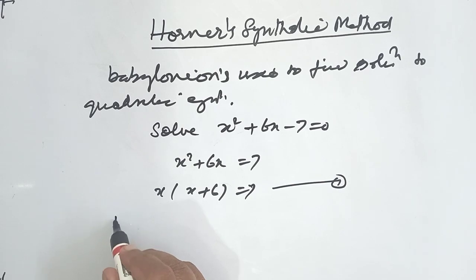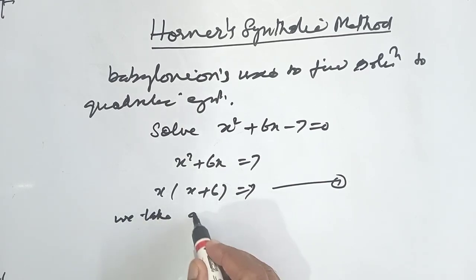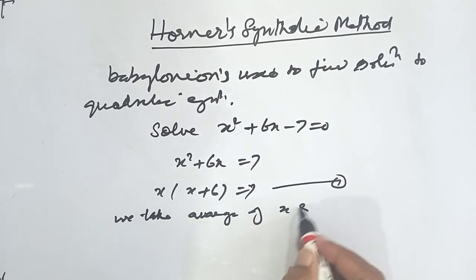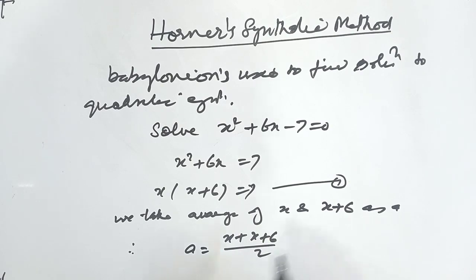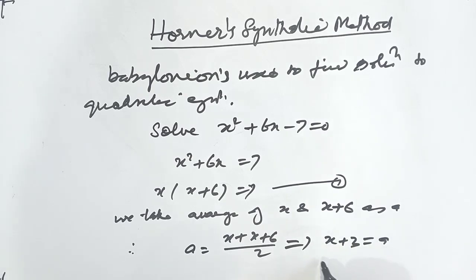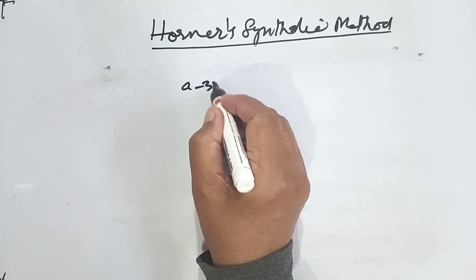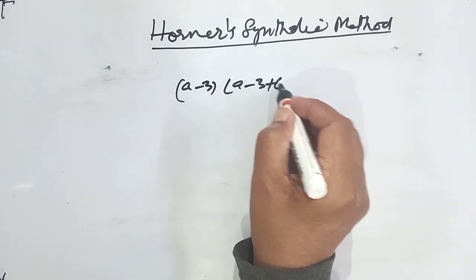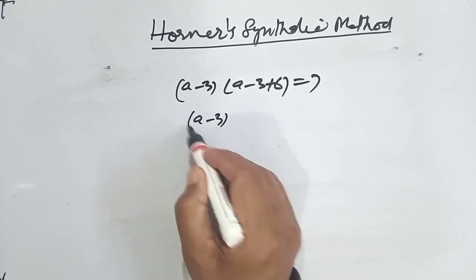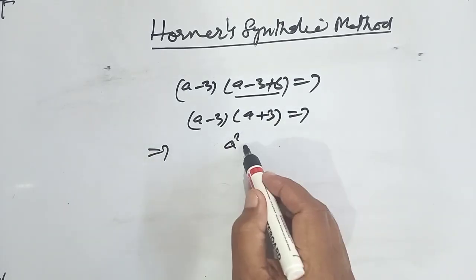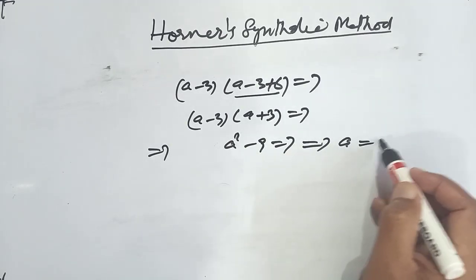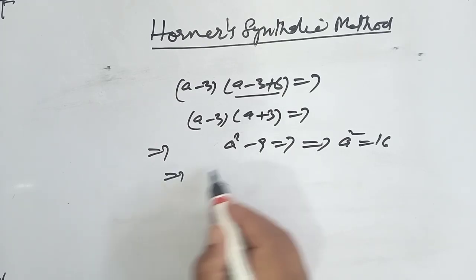Now, we take the average of x and x + 6 as 'a'. Therefore, a = (x + x + 6) / 2, which implies that x + 3 = a, and therefore x = a - 3. Substituting, (a - 3)(a + 3) = 7, which gives a² - 9 = 7, so a² = 16, and therefore a = 4.